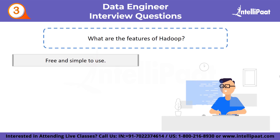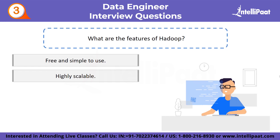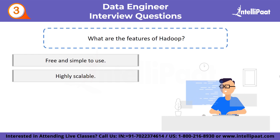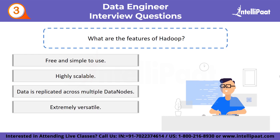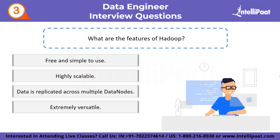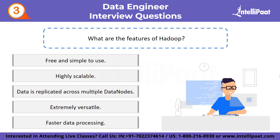Third question: what are the features of Hadoop? First, it is free and simple to use. Second, Hadoop is highly scalable — a large amount of data is distributed across several devices in a cluster and processed in parallel, and the number of nodes can be increased or decreased based on needs. Third, data in a Hadoop cluster is replicated across multiple data nodes, ensuring data availability even if one system fails. Fourth, Hadoop handles structured, semi-structured, and unstructured data. Finally, Hadoop allows for faster data processing.